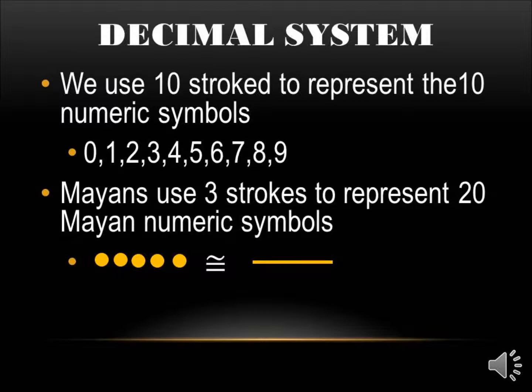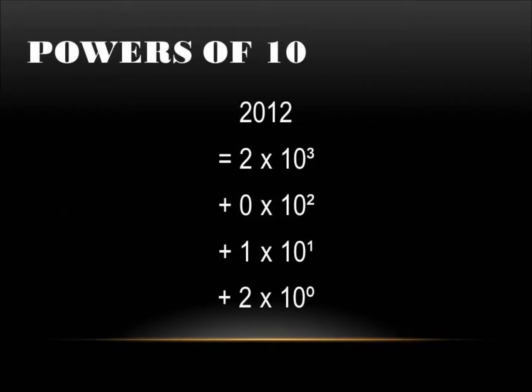This system originated in India, but it wasn't until it reached Africa that the symbols came about. The Mayans use a base 20 system that has three strokes to represent 20 numeric symbols. These numbers are called Hindu-Arabic numerals.